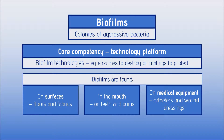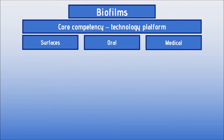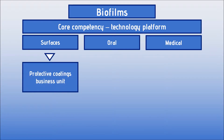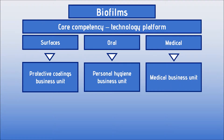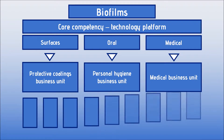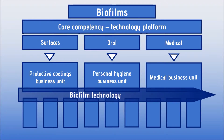So how would you manage that? You have these different technologies in different business units across a very diverse company — one business unit selling coatings, another selling mouthwash, and another making coatings for medical devices. All of those are different business units serving different markets, sectors, and geographies. What you need to do is assemble all the technologies and then manage them across the organisation, putting somebody in charge of managing biofilms. Some companies call it the technology skewer because it skewers across business units.